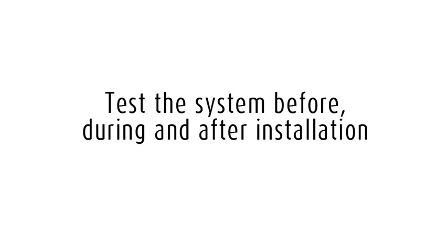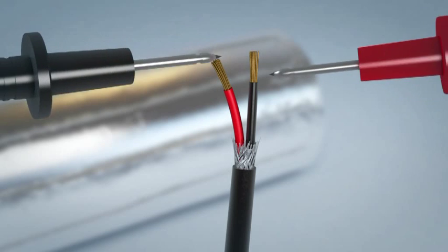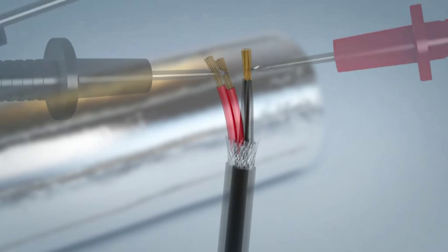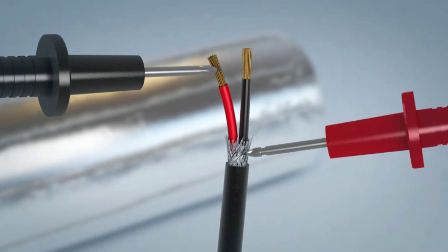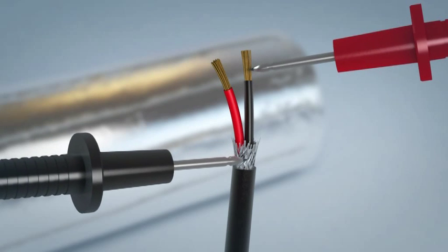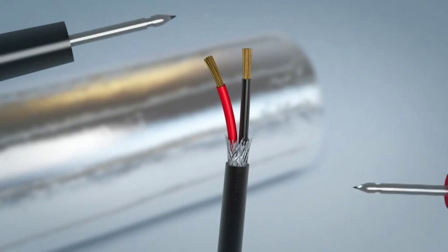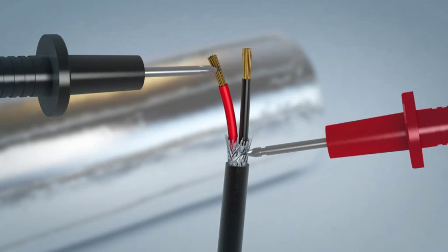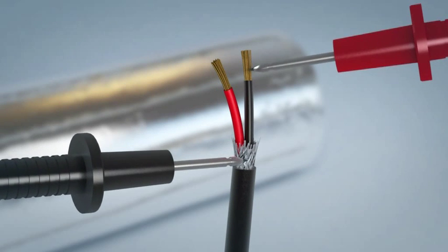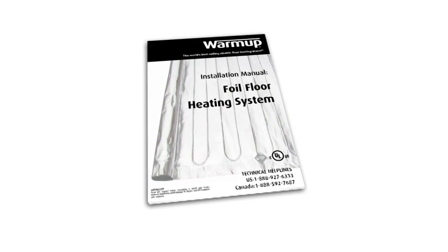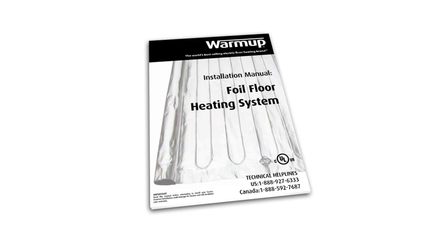It is important to test the system before, during, and after the installation. Check that the resistance between the two conductors matches the resistance shown in the manual and at the end of the cold lead label on each mat. Also check that the reading between each conductor and ground is completely open and that there is no resistance reading. Record your readings in the Warm-up installation manual for warranty registration.